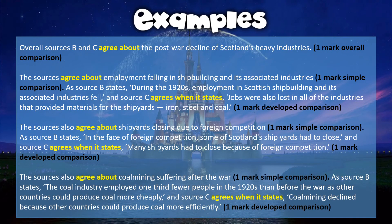Those two comparisons are enough for your four marks. A third point you could use: the sources also agree about coal mining suffering after the war. As source B states: 'The coal industry employed one third fewer people in the 1920s than before the war, as other countries could produce coal more cheaply,' and source C agrees when it states: 'Coal mining declined because other countries could produce coal more efficiently.' An important tip: do not cut your quotes short — use the full quote from the source to guarantee yourself the mark.